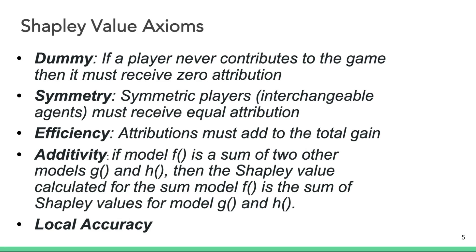Shapley value axioms guarantee the fair allocation of gain among members of the coalition. Just to give you a rough idea of the axioms that need to be satisfied by the Shapley value solution: Dummy — if a player never contributes to the game, then it must receive zero attribution. Symmetry — if two players are interchangeable, they will receive equal attribution. Efficiency — attribution must add up to the total gain. Additivity — if a model F is the sum of two other models J and H, then the Shapley value calculated for the sum model is the sum of the Shapley values for models J and H.